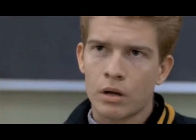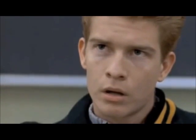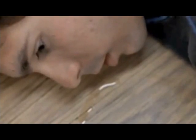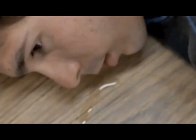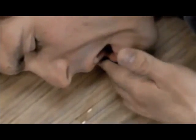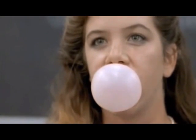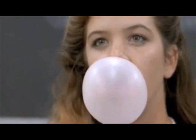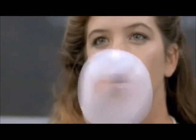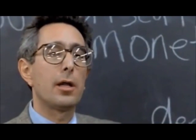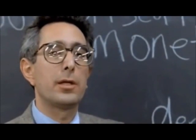Today, we have a similar debate over this. Anyone know what this is, class? Anyone? The Laffer Curve. Anyone know what this says? It says that at this point on the revenue curve, you will get exactly the same amount of revenue as at this point. This is very controversial. Does anyone know what Vice President Bush called this in 1980? Something D-O-O Economics. Voodoo Economics.